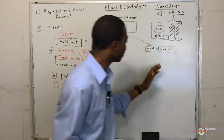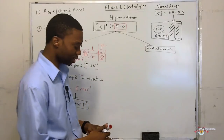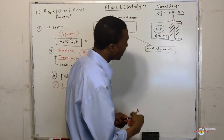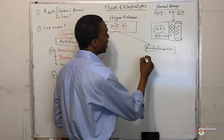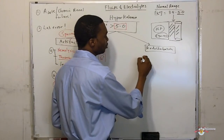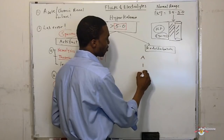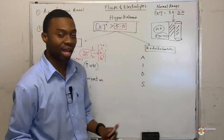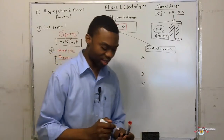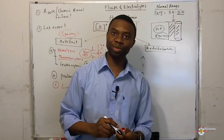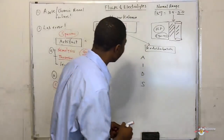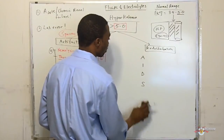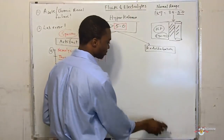Now let's talk about redistribution. The mnemonic for redistribution is AIDS. That is how potassium is redistributed. Let's pick them one at a time. A is for acidosis.